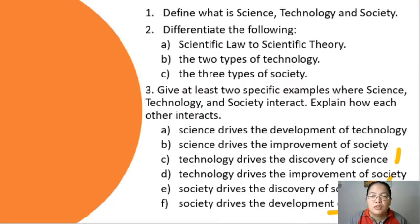These are the questions that we will answer for this week. First, we have to define what is science, technology and society. Second, we will differentiate scientific law from scientific theory. What are the two types of technology and the three types of society. And as your activity later, you will give at least two examples where science, technology and society interact, and explain their interaction.